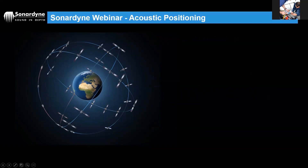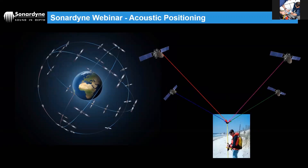Let's look at how GPS itself works, because we use similar principles in our acoustic positioning systems. Satellites send signals every second, time-stamped, and we receive them at a ground station. We can determine how long the signal took to travel. Any GPS or GNSS system needs to know where each satellite is — there's a database of all satellite orbits — and we triangulate or trilaterate our position based on those signals.